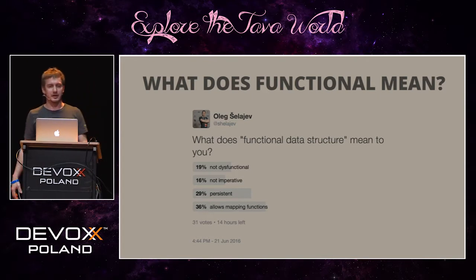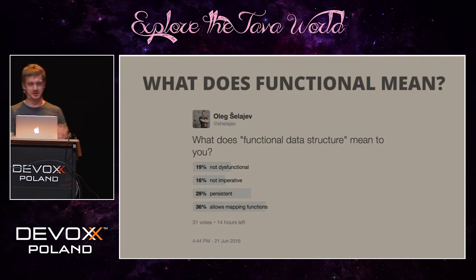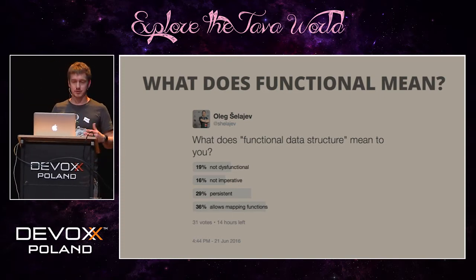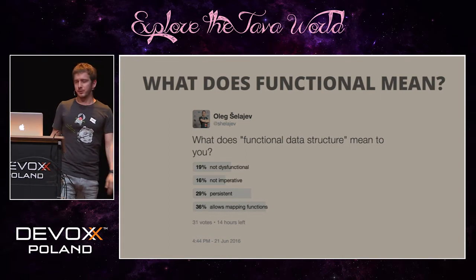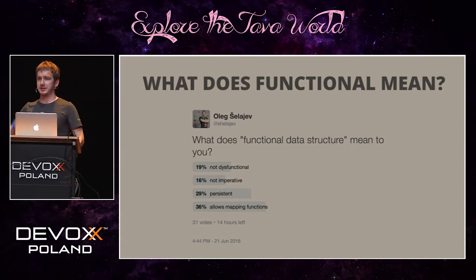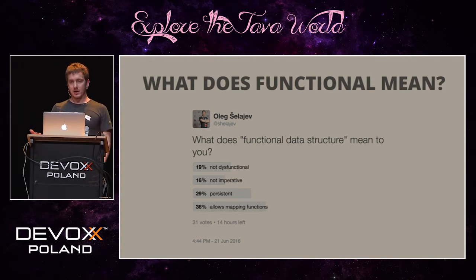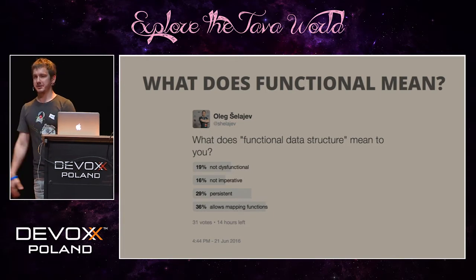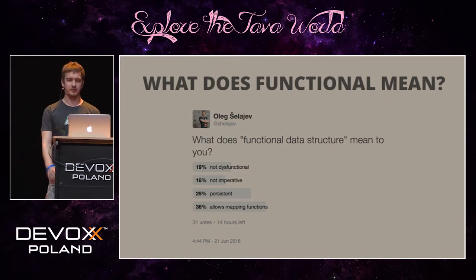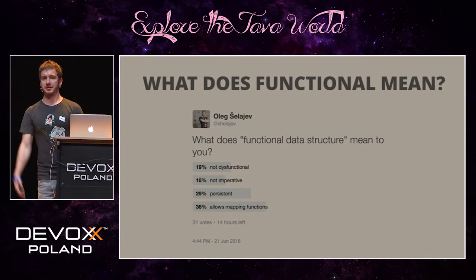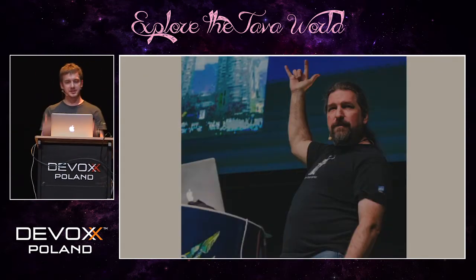The correct answer in that poll was 'persistent,' but all the other answers are also correct. A functional data structure should be functionally correct, not implemented in an imperative way where you mutate state and reassign things, and it has to be persistent. In the rest of our time we'll explore the possibilities of using functional data structures in Java and learn about the trade-offs, how to design them, and how to reason about them.